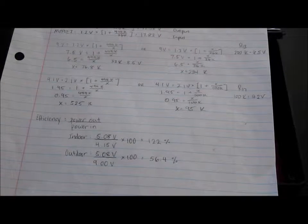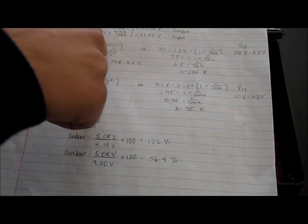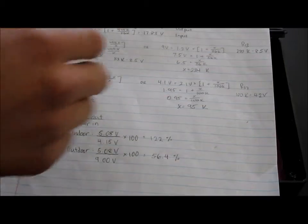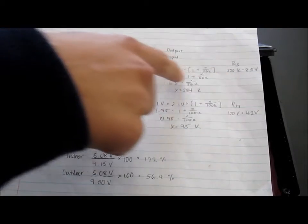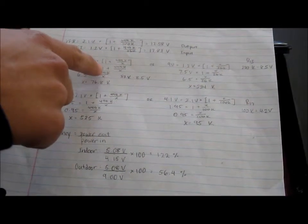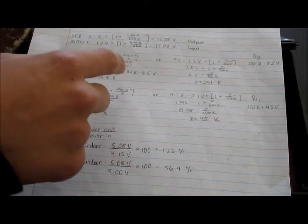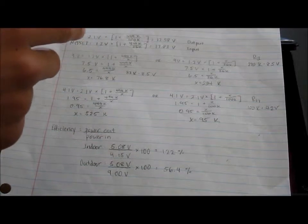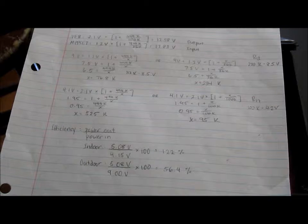So using these equations right here, I was able to solve for a different resistor value so it can operate at about 8.5 volts. Using this equation—1.2 volts times in parentheses 1 plus 499 kilohms over X—I was able to solve for a 220 kilohm resistor value so it can operate at 8.5 volts.